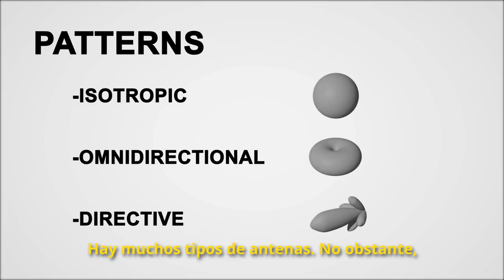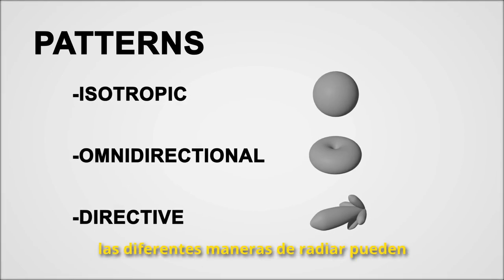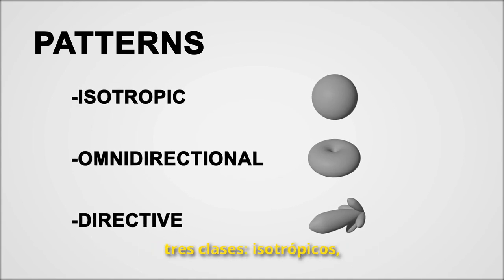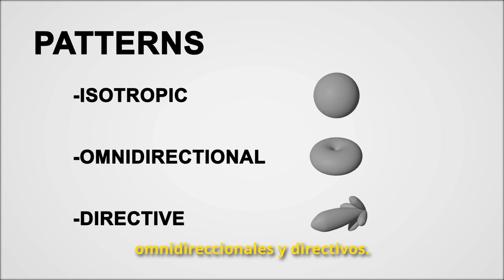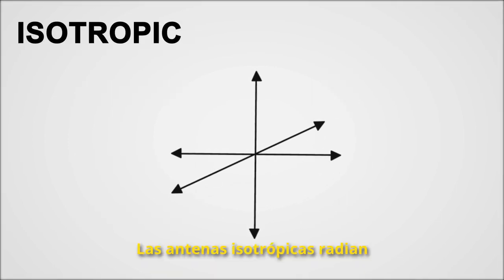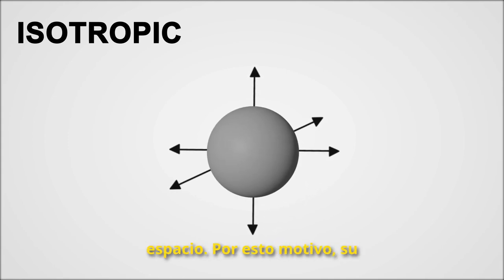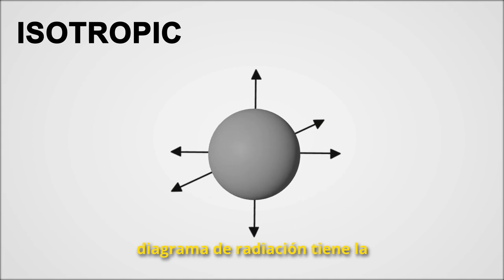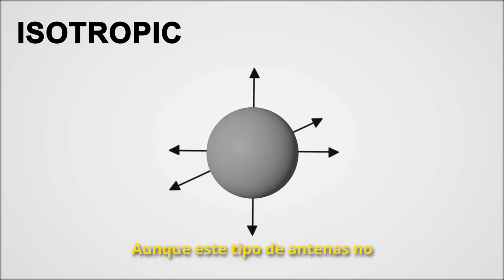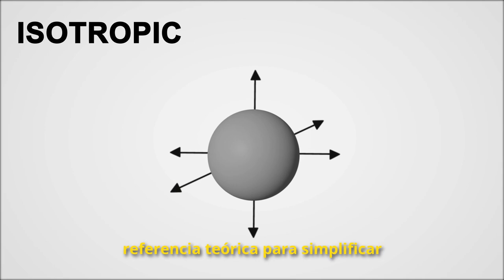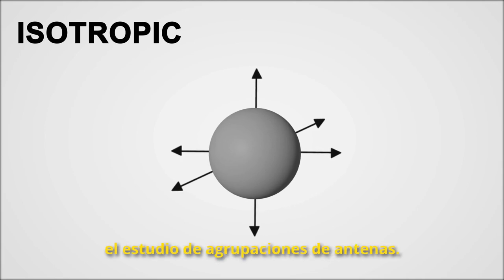There are many types of antennas. Nonetheless, the different ways of radiating can be generally classified into three main classes: isotropic, omnidirectional, and directive patterns. Isotropic antennas radiate the same amount of energy in all space directions. For this reason, their radiation pattern has the shape of a perfect sphere. Although this kind of antenna cannot be found or made in single elements, they serve as a theoretical reference to simplify the study of antenna arrays.